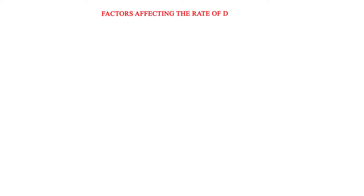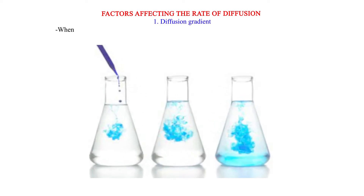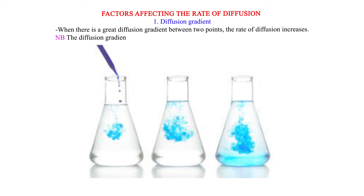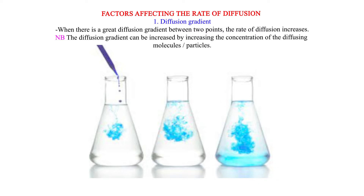Factors affecting the rate of diffusion. 1. Diffusion gradient: When there is a great diffusion gradient between two points, the rate of diffusion increases. Note: The diffusion gradient can be increased by increasing the concentration of the diffusing molecules or particles.